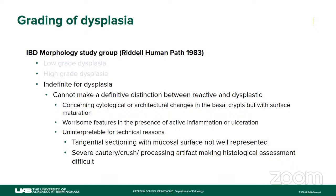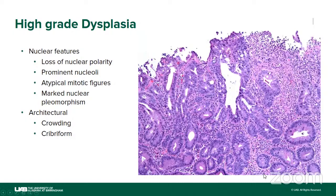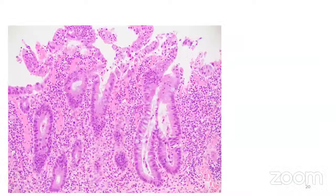Even when we diagnose low-grade dysplasia or no histologic dysplasia, surveillance is intensive — the same applies to indefinite for dysplasia. For low-grade dysplasia, the key feature is maintaining nuclear polarity, just as with conventional adenomas. We see hyperchromatic, stratified nuclei confined to the base, with apoptotic debris and larger nuclei compared to normal. For high-grade dysplasia, there is loss of nuclear polarity, crowded crypts with crypt reforming, atypical mitotic figures, and marked nuclear pleomorphism. Architectural changes help me make the diagnosis of high-grade dysplasia.